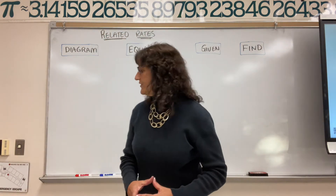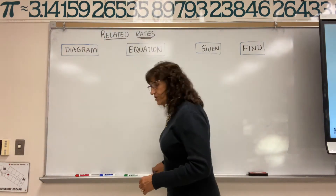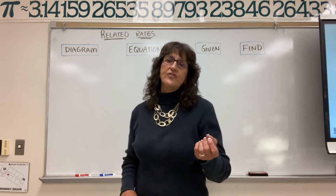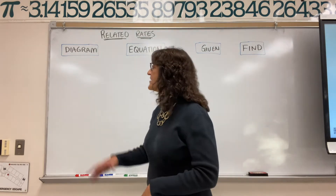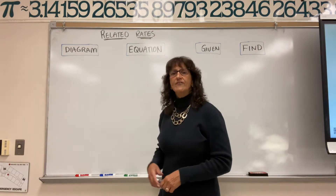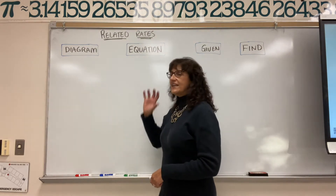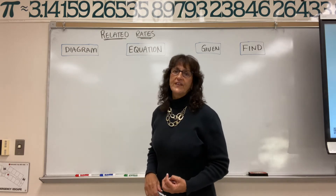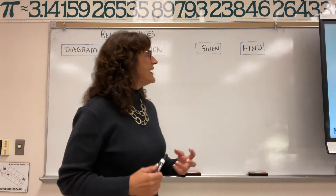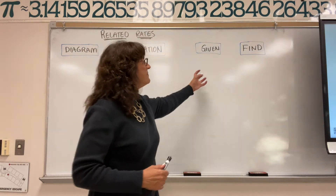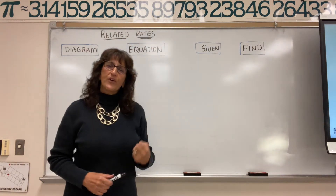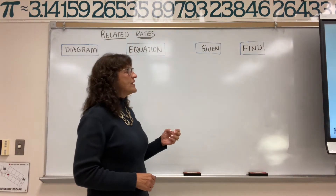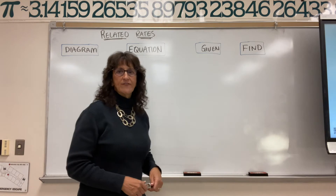With related rates problems, you probably want to see if you can draw a diagram to help visualize what the situation looks like. And then once you have your diagram drawn, figure out an equation that relates the variables in the diagram. And then once you have that set up, go back to the word problem, figure out what the quantities are, label the quantities that are given to you, and identify what you have to find.